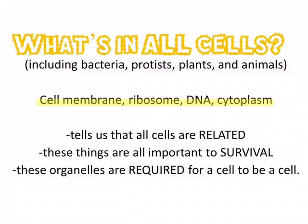Finally, something that you must know is that all cells do have a few of the same organelles — bacteria, protists, plants, and animals. These organelles are cell membranes, ribosomes to make proteins, DNA, which is their genetic material, and cytoplasm, the filling of the cell. This tells us that all cells are related to each other, that these organelles are especially important to survival, and that if these organelles are not a part of something, then that something is not a cell.